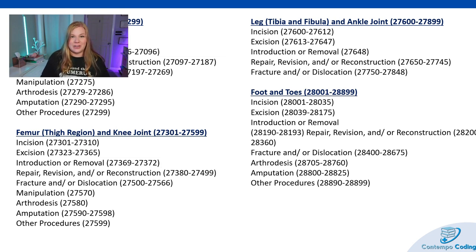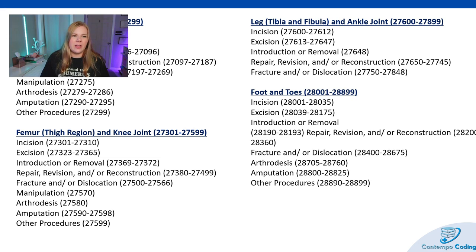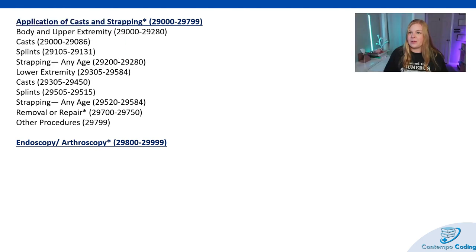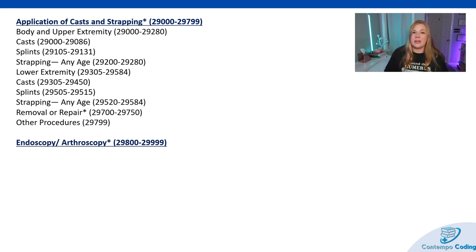Then we get down to feet and toes — incision, excisions, repair, revisions, fracture, arthrodesis, amputation. After going from head to toes, we also have application of casts and strapping included here. Depending on what type of procedure you're doing, casts or strapping might be bundled in — something to get familiar with. We have body and upper extremity, splints, strapping, lower extremities, removal and repair. Then at the very end there's a section for endoscopy and arthroscopies.